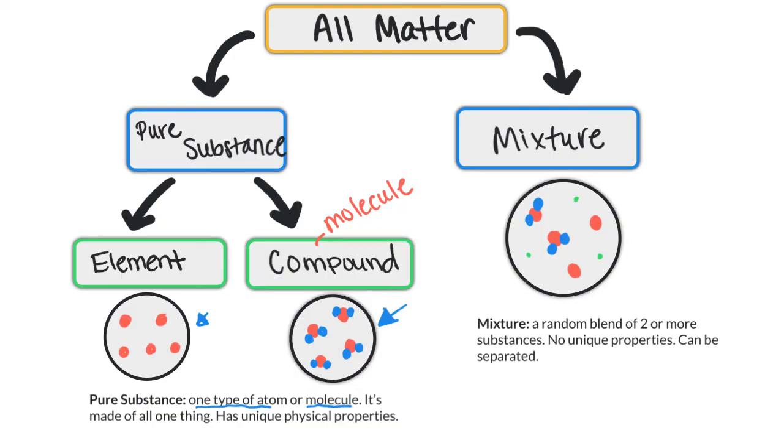A mixture is a random blend of two or more substances. There are no unique properties. And one big thing is that a mixture can be separated. You can get the pieces out of a mixture, the different substances out of the mixture. Whereas in a pure substance, it cannot be separated. That's something that you definitely need to remember - it cannot be separated.